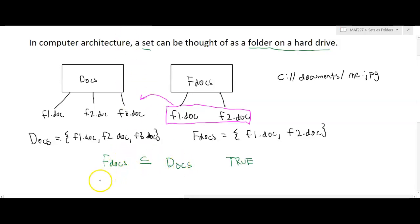If we flip that around and we say, is docs a subset of fdocs? Well, that's going to be a false statement because not all of the files inside of docs are also in fdocs. In fact, f1.doc is inside of fdocs, but f3.doc is missing in fdocs. Therefore, we cannot say that this folder docs is a subset of the fdocs folder.